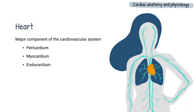The pericardium is a thin outer lining which surrounds the heart. The myocardium is the muscle layer which is made up of specialised cardiac myocytes, and lastly the endocardium which lines the inner chambers of the heart.